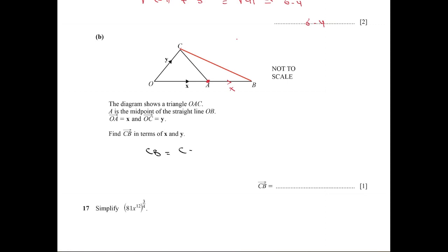To find CB: CB equals CO plus OB. The CO vector is equal to negative y because it is in the opposite direction, then OB is equal to 2x. So the answer is 2x minus y. Thank you.